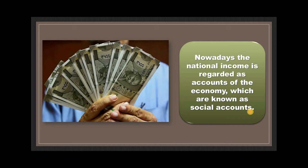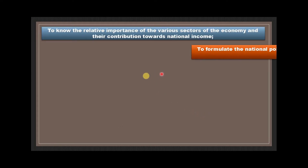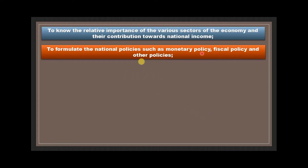National income enables us to know about the relative importance of the various sectors of the economy and their contribution towards national income. From the calculation of national income we can find how income is produced, how it is distributed, and how much is spent, saved, or taxed. This helps to formulate national policies such as monetary policy, fiscal policy, and other policies, and proper measures can be adopted to bring the economy to the right path.